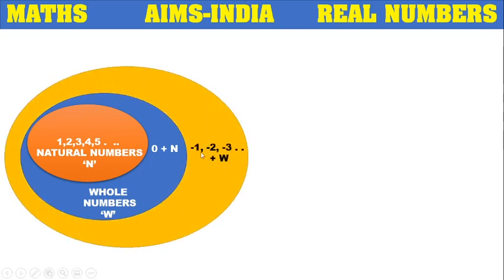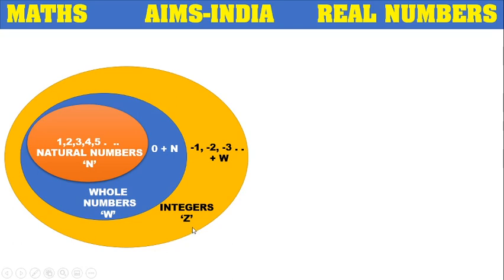If we add minus 1, minus 2, minus 3 — like that, negative numbers — to the whole numbers, meaning to 0 and to the positive numbers, then we will get a new number system that is called the integer system.